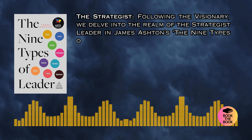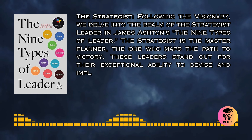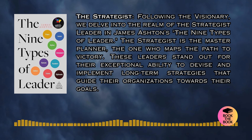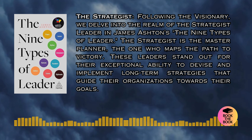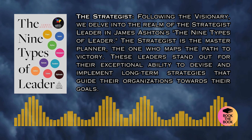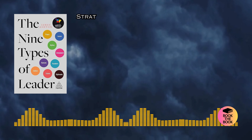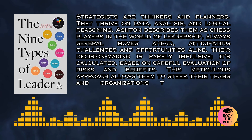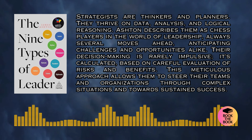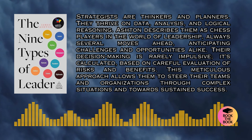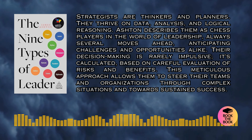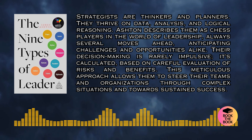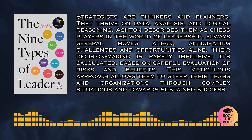Following the visionary, we delve into the realm of the strategist leader in James Ashton's The Nine Types of Leader. The strategist is the master planner, the one who maps the path to victory. These leaders stand out for their exceptional ability to devise and implement long-term strategies that guide their organizations towards their goals. Ashton describes them as chess players in the world of leadership, always several moves ahead, anticipating challenges and opportunities alike. Their decision-making is calculated, based on careful evaluation of risks and benefits, steering their teams through complex situations towards sustained success.